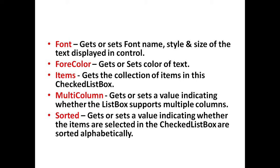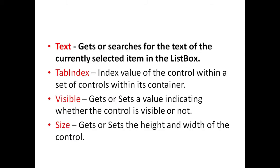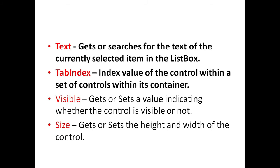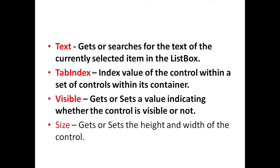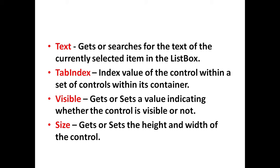Text property is used to get or search for the text of the current selected item in the list box. TabIndex property sets the index value of the control within a set of controls within its container. Visible property is used to get or set a value indicating whether the control is visible or not. Size property is used to get or set the height and width of the control.